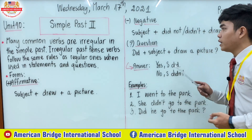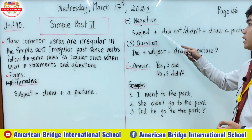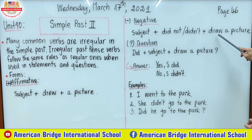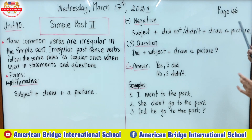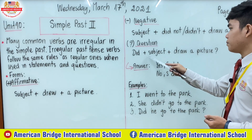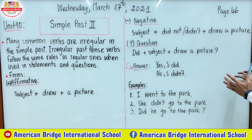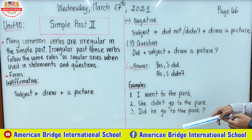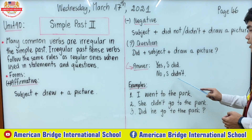For the negative form, we add 'did not' or 'didn't' plus the base verb — for example, 'didn't draw a picture'. In the negative form we don't change the verb; we keep it as the infinitive. For the question form: did plus subject plus draw a picture, followed by a question mark. For yes/no questions you can answer: 'Yes, I did' or 'No, I didn't', according to the subject you use.